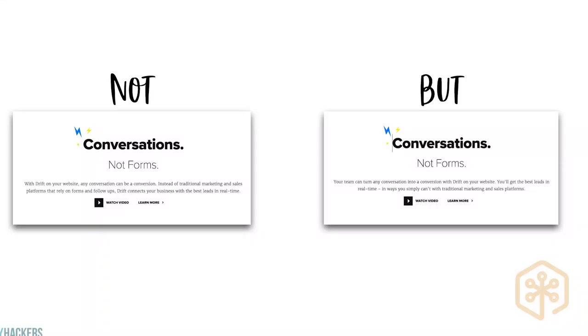So I went to Drift's homepage and grabbed this example, because this is everywhere. This is what they have: 'Conversations, not forms. With Drift on your website, any conversation can be a conversion. Instead of traditional marketing and sales platforms that rely on forms and follow-ups, Drift connects your business with the best leads in real time.' As readers of the site, we can look at that and go, 'yeah, that's perfectly fine copy, that sounds good.' But if we rewrite it — keeping the message exactly the same — can we make it sound more like it's actually about your prospects so they can see themselves on the page?